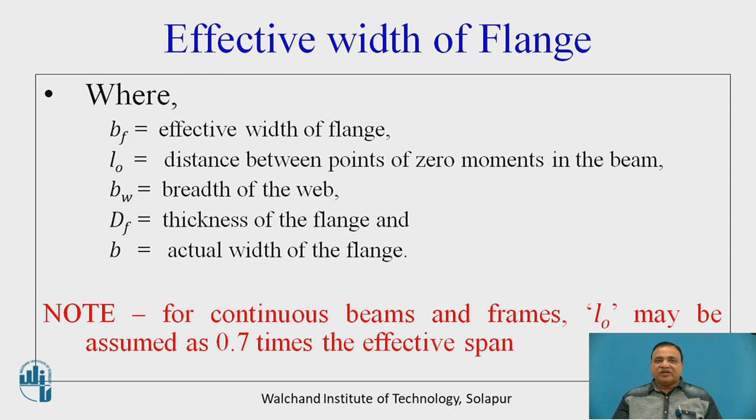Where Bf is the effective width of the flange, L0 is the distance between the zero moment in the beam, Bw is the breadth of web, Df is thickness of flange and B is the actual width of flange. Note: for continuous beams, the frames L0 may be assumed to be 0.7 times the effective span.